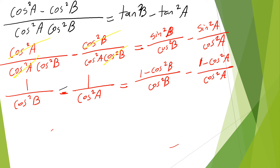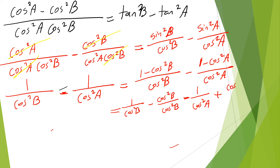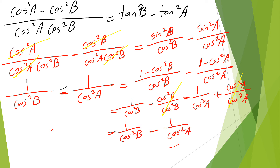I can't do anything more on the left-hand side, so I'm going to work on the right-hand side. By splitting the fraction: one over cosine squared b minus cosine squared b over cosine squared b minus one over cosine squared a plus cosine squared a over cosine squared a. After simplifying, that gives one over cosine squared b minus one over cosine squared a — which is the same as the left-hand side. So the left-hand side equals the right-hand side, and it's proven.